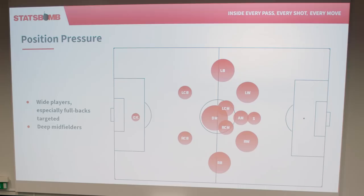This is how actions under pressure break down by position. It's pretty similar to the graphs Will showed, but as you'd expect, wide players — especially fullbacks — receive a ton of pressure and have to make all their passes under pressure, as do wingers and deep players like defensive midfielders. That's partly because deeper turnovers are much more valuable, but it also makes sense for wide players because half the pitch is already shut off by the sideline, so half the job of pressing that player is already done.